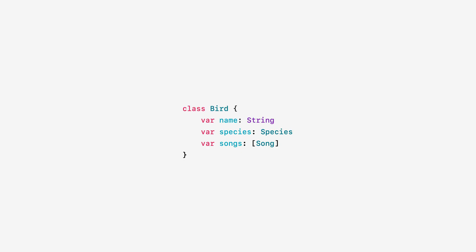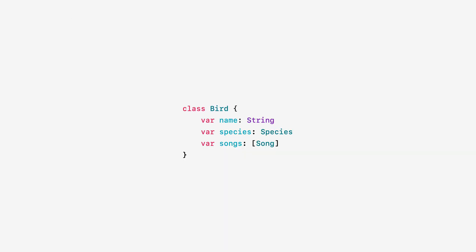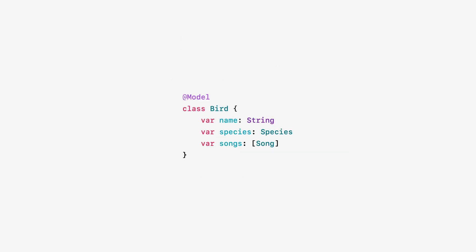If you were defining a model in Swift, you might write code like this using regular Swift types. To manage this with Core Data, you'd then need to redefine the same model using the model editor built into Xcode. But with SwiftData, you just annotate your class with the @Model macro. This single line of code packs a lot of functionality, like automatically enabling persistence, iCloud synchronization, undo and redo, and more. You can then refine these automatic behaviors by annotating properties with additional attributes, like indicating the value must be unique across all instances.